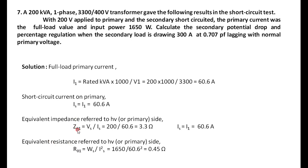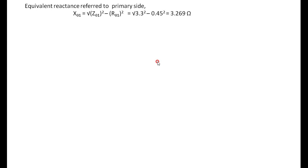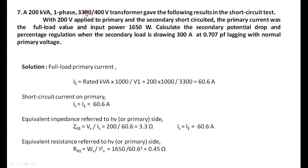Then find X01. If you know Z01 and R01, X01 = √(Z01² − R01²). Doing this calculation, the equivalent reactance referred to the primary side X01 = √(Z01² − R01²) = 3.26 ohms. These are the equivalent resistance and reactance referred to the primary side, since all meters are connected on the HV (primary) side.